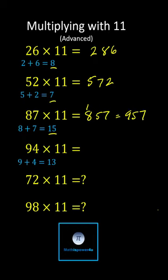For 94 times 11, we begin with a 9, end with a 4. The middle digit can't be 13, we record the 3, perform an exchange with the 1, add the 1 and the 9, which gives us 10, resulting in 1034.